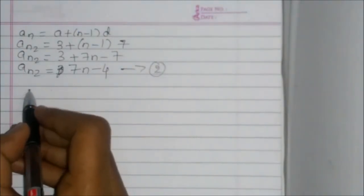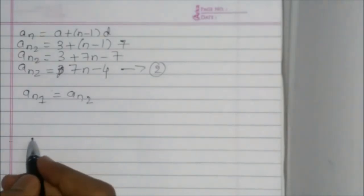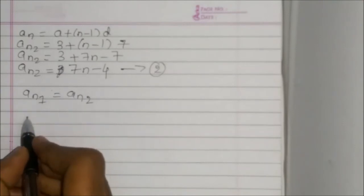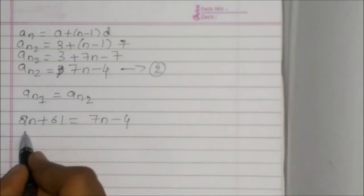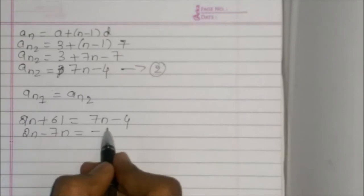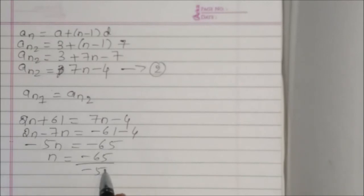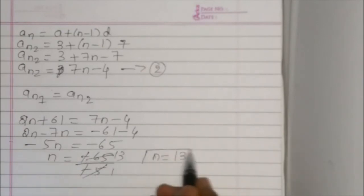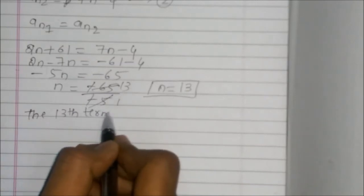Now, in the question they have given that An1 is equal to An2. So equation 1, 2n plus 61, is equal to 7n minus 4. 7n will come to the left side, so minus 5n is equal to minus 65. N is equal to minus 65 divided by minus 5. Minus minus cancel, so n is equal to 13.